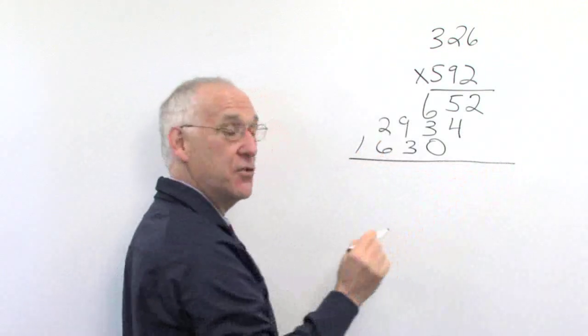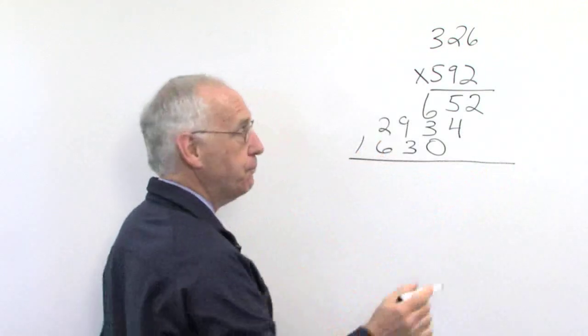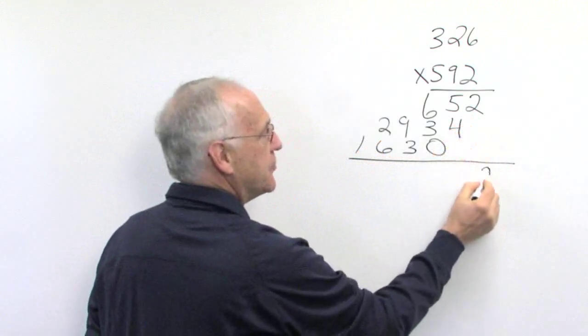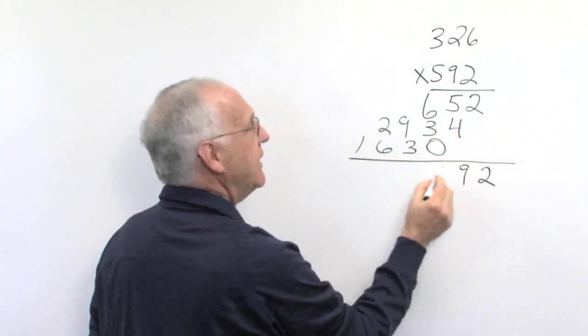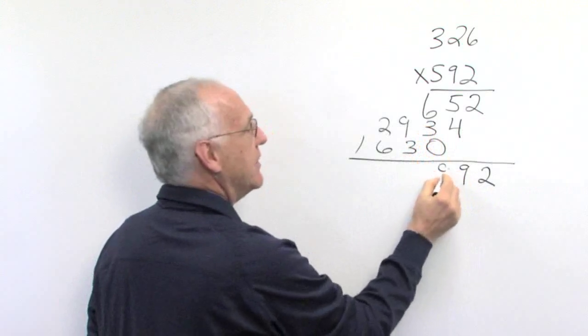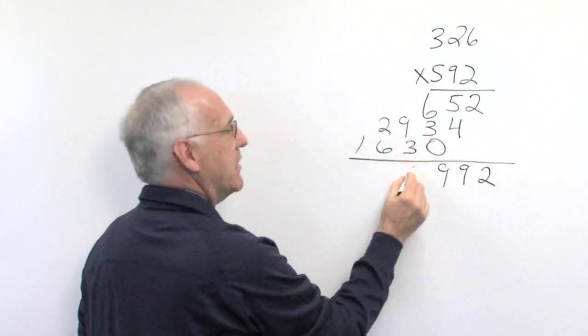Now we're very careful to align the numbers. So now we bring it down. The 2. 5 and 4 is 9. 6 and 3 is 9. 9 and 3 is 12.